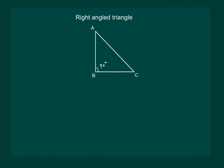Let us study the right angle triangle. Let ABC be a right angle triangle. The sides have some special names. The side opposite to the right angle is called the hypotenuse, while the other two sides are called the legs of the right angle triangle.